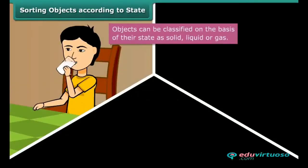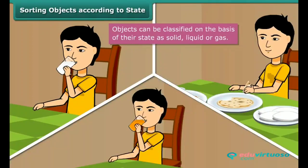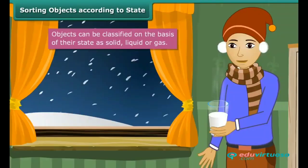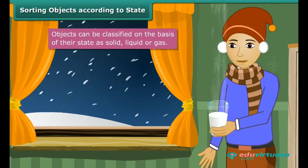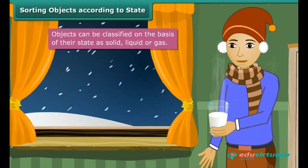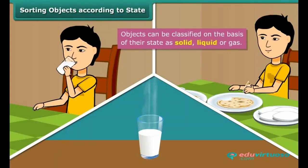The water you drink to quench your thirst is liquid, whereas the food you eat is solid. The chilled juice you relish in summers is liquid, whereas the glass container you have it from is solid. The steaming hot milk you enjoy in winters is liquid, whereas the steam coming out of the milk is a gas. Thus, all the objects we see around us or use in our daily life can be classified into one of three categories: solid, liquid, and gas.